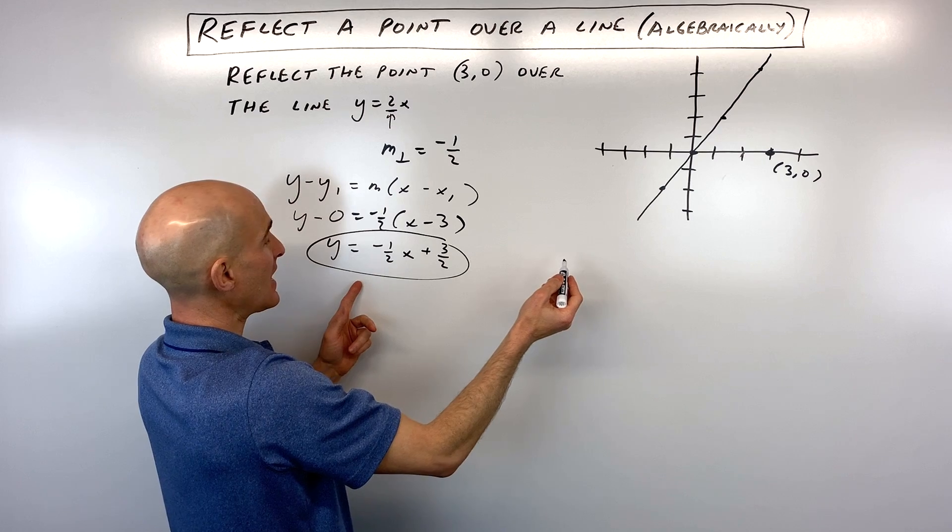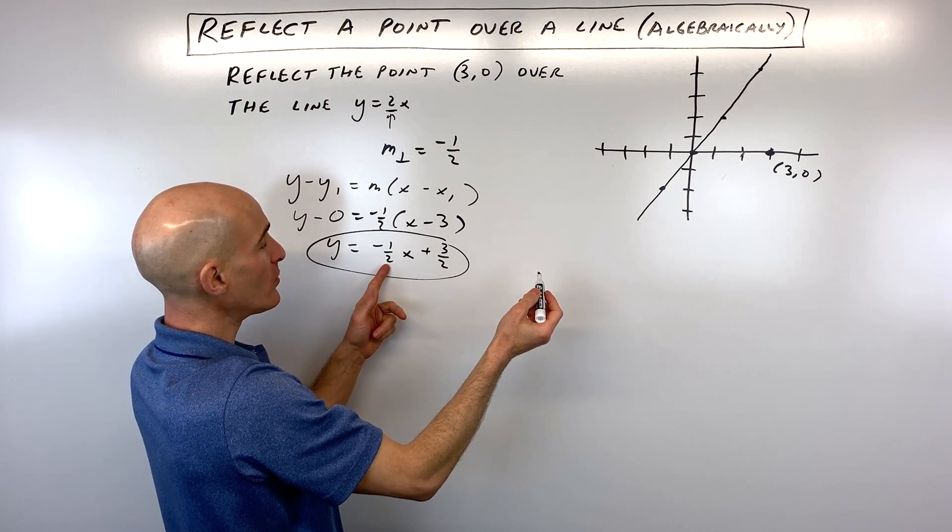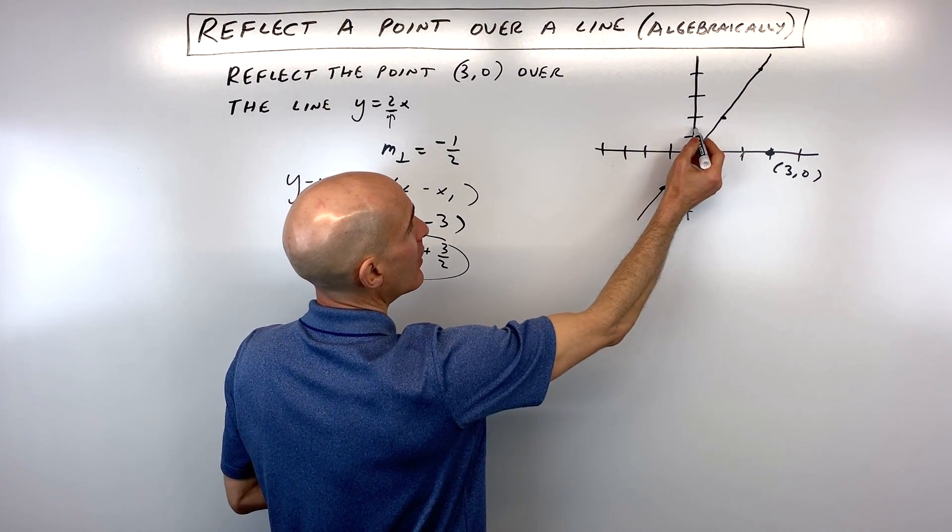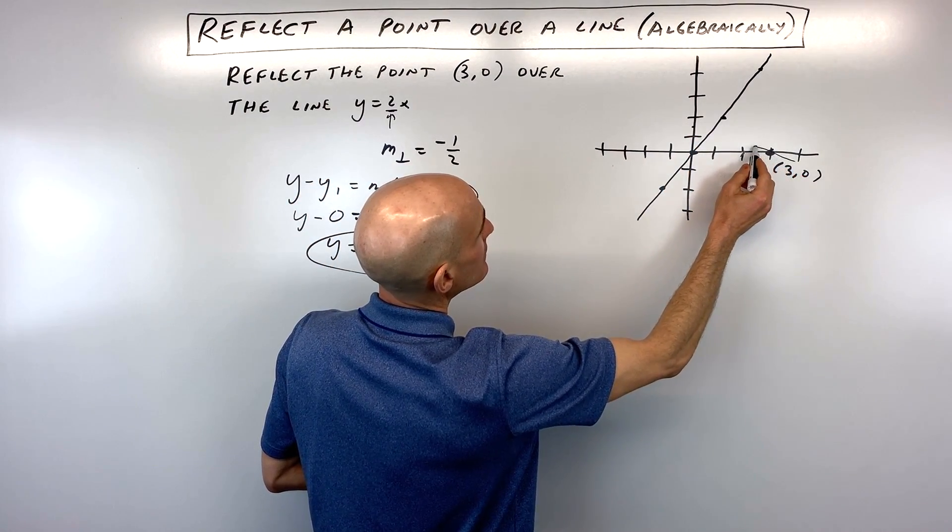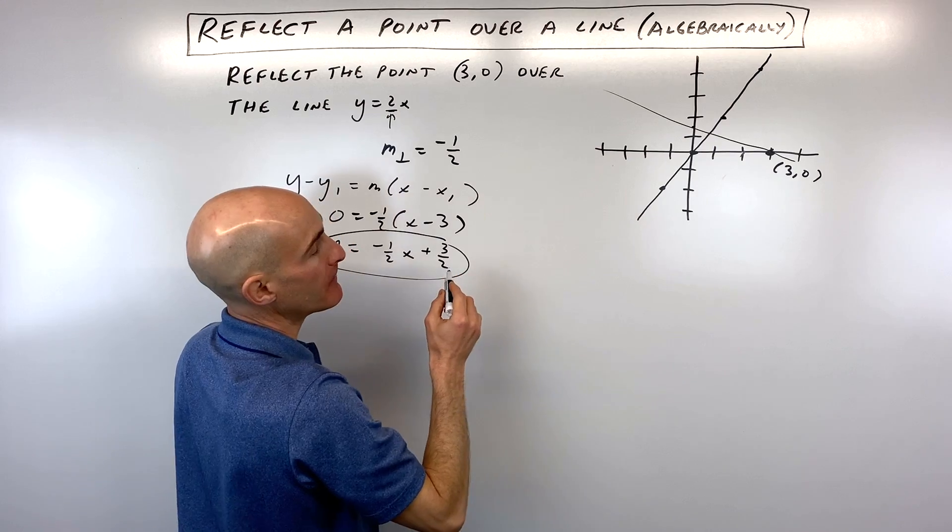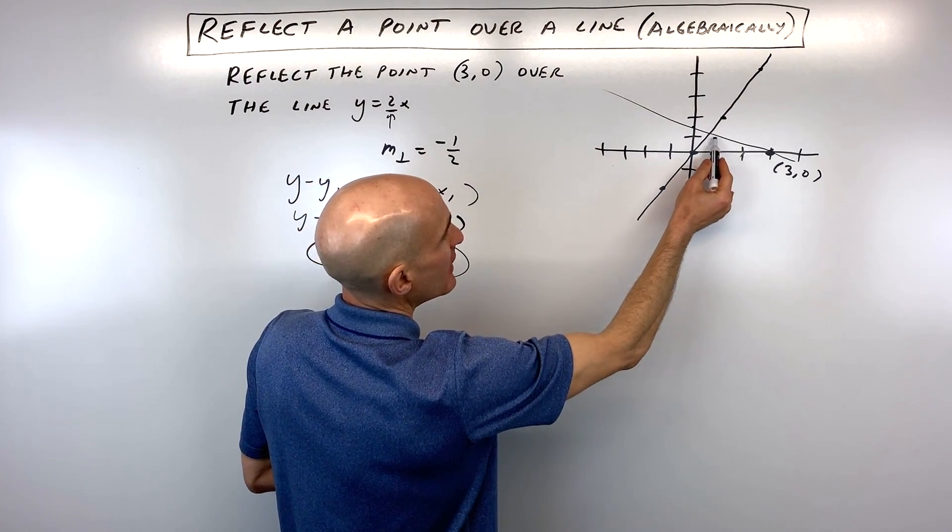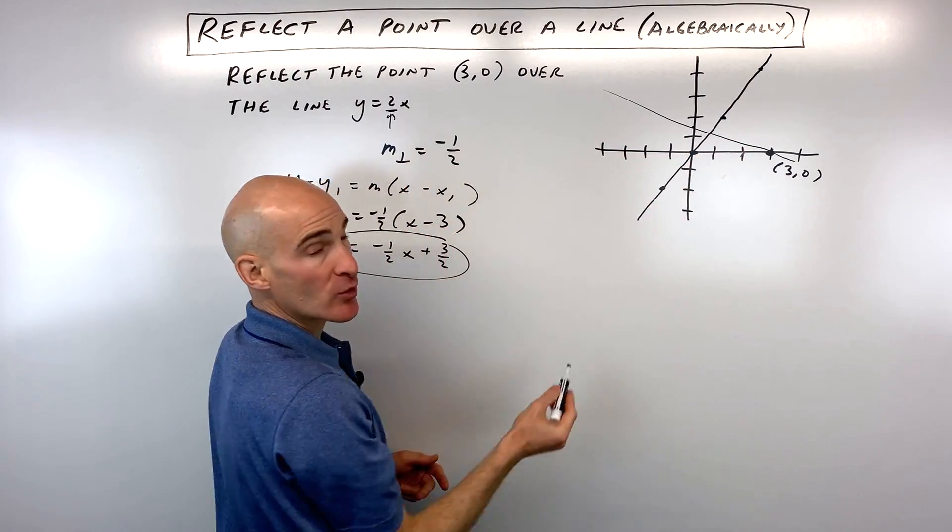It has a slope of negative 1 half. It has a y-intercept of 1.5 right here. So you can see that this is going to look something like this. But now what we want to do is find out where do these two lines intersect, where do they cross.